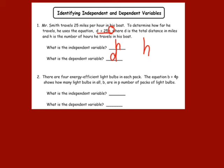In the next example, there are four energy-efficient light bulbs in each pack. The equation b equals 4p shows how many light bulbs in all, b, are in p number of packs. How many light bulbs do you have? Well, it depends how many packs you have. So the dependent variable is b, and the independent variable is p.